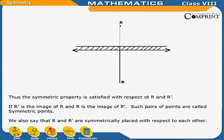In the mirror, the symmetric property is satisfied with respect to R and R', if R' is the image of R and R is the image of R'. Such a pair of points are called symmetric points. We also say that R and R' are symmetrically placed with respect to each other.